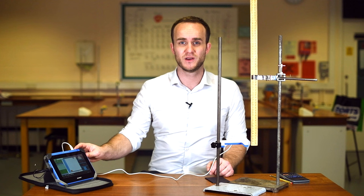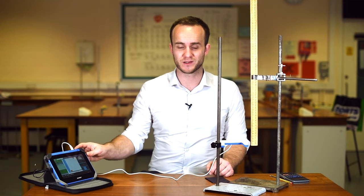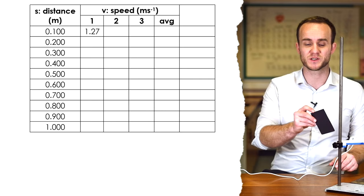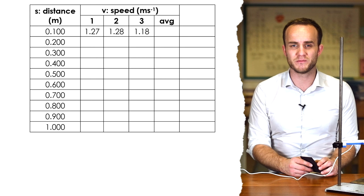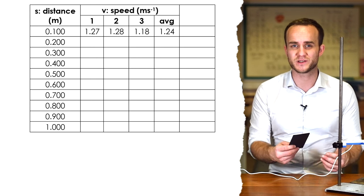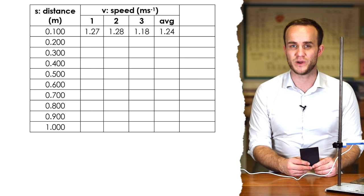The data logger is giving me a speed of 1.27 meters per second. And it's calculated that because I've already put the length of the card in. Let's do it a second time. We definitely want to do repeats with this experiment. And a third time. Calculating a mean average of those three speeds then I'm going to drop the card from 20 centimeters, 30 centimeters and so on three times and get an average speed for each distance.